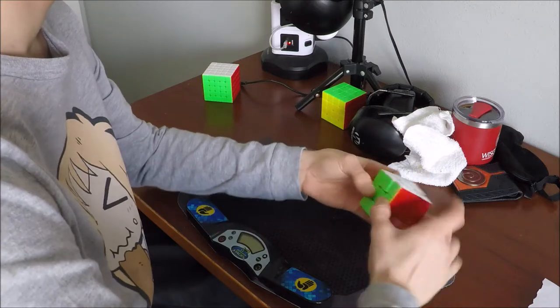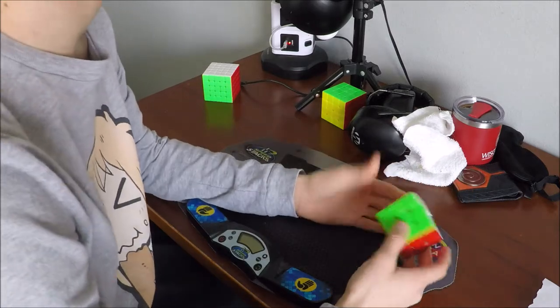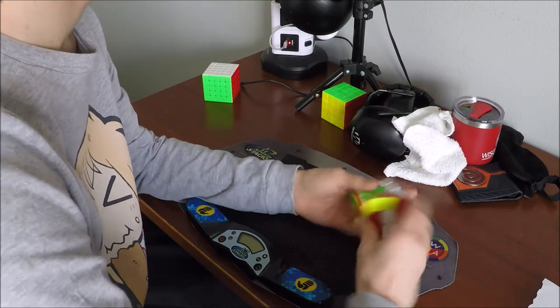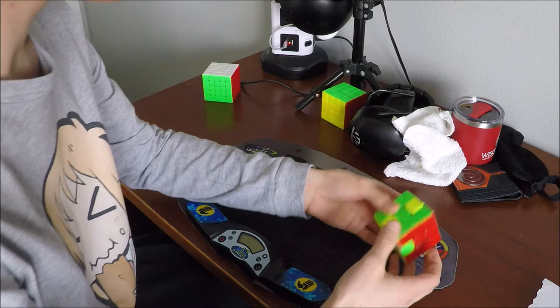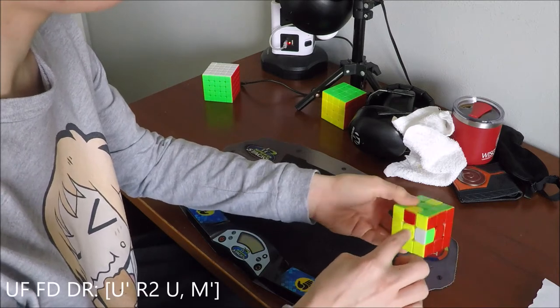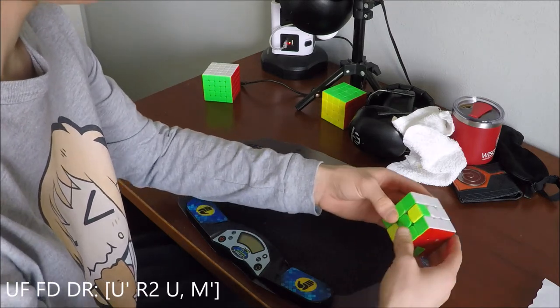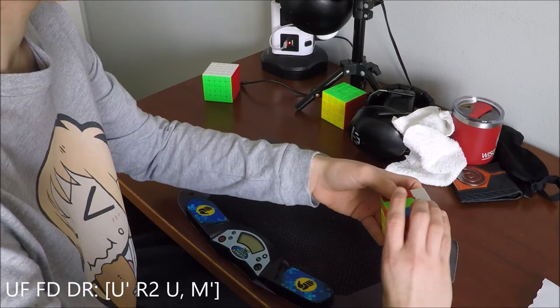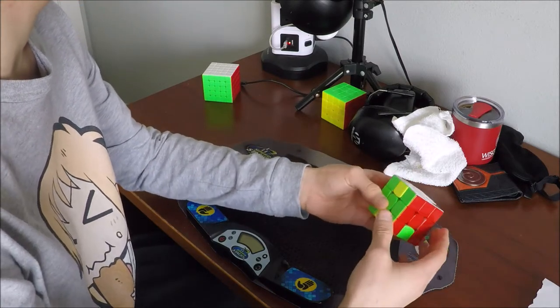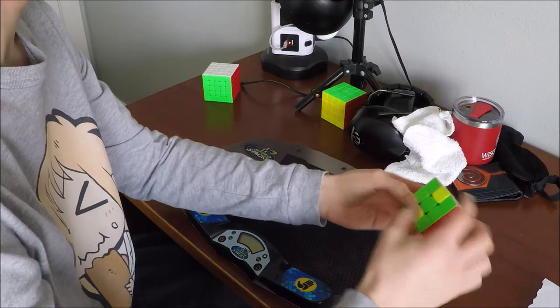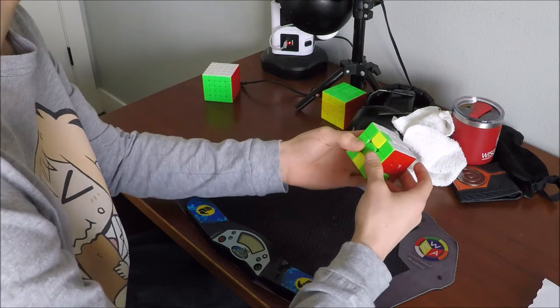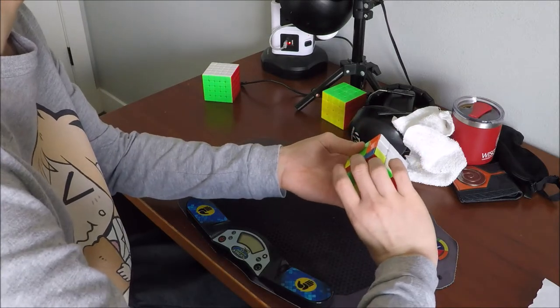I'm going to show you a few algorithms where it's useful, and so first case is this, UF to FD to DR. And so the algorithm you just saw, it's like U into an SR2 thing, but what you can do instead is just do the pure comm, which I'll put on screen. You can just do the pure comm and then use the finger trick.